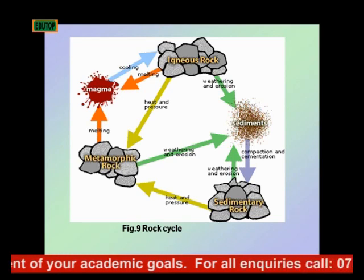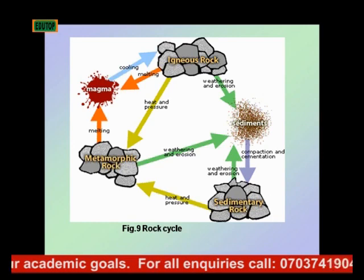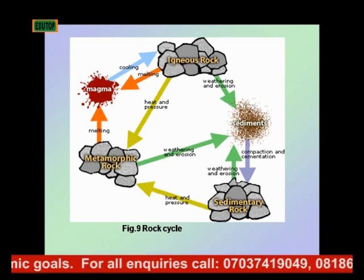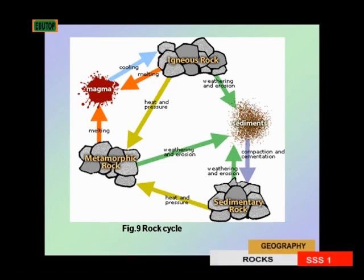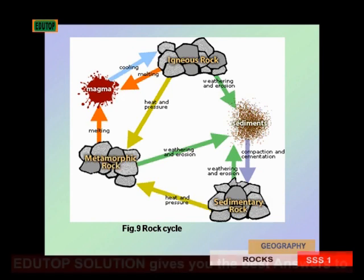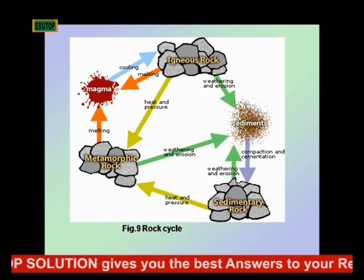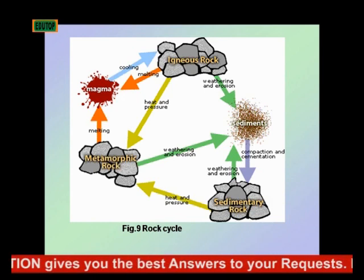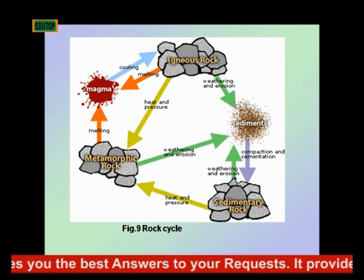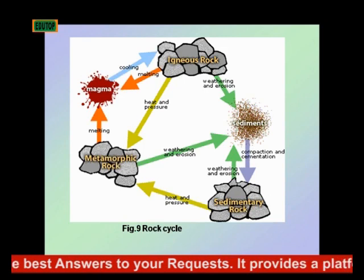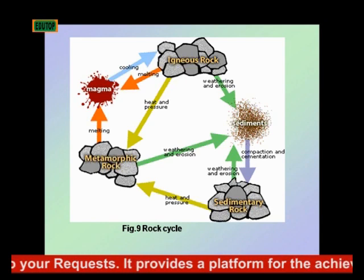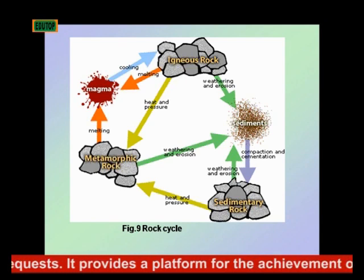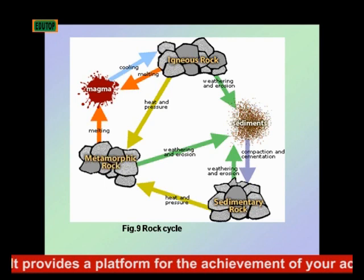An igneous rock also, on melting, can give rise to magma, or a metamorphic rock. Heat and pressure can turn an igneous rock to a metamorphic rock. As we go on in the study, we will see some examples of modified rocks.